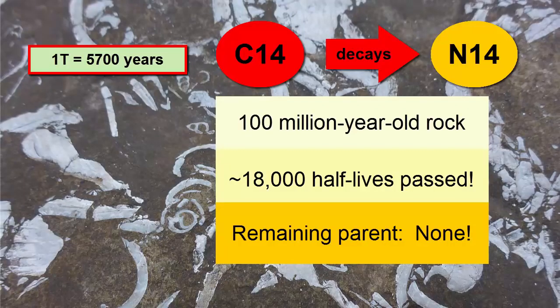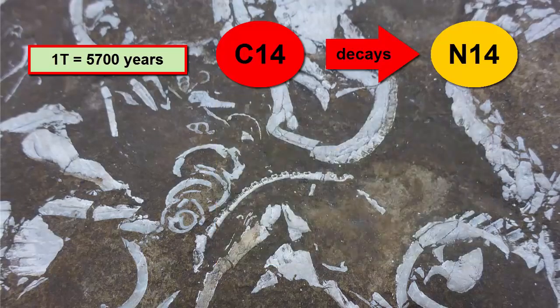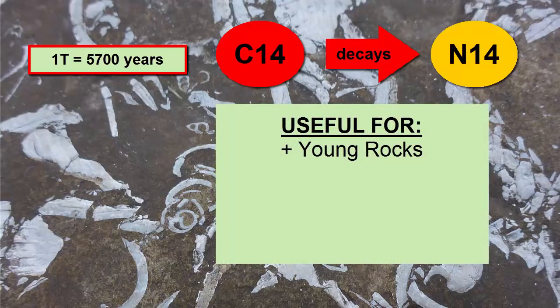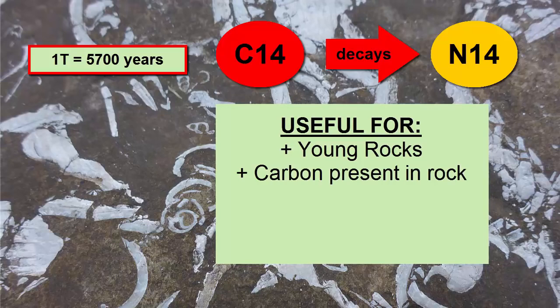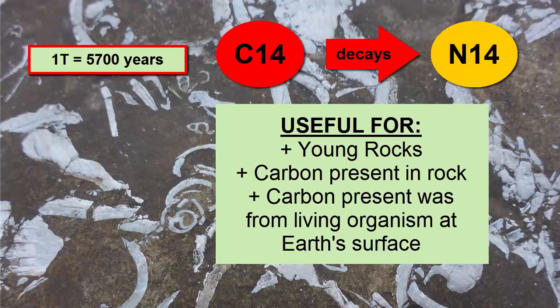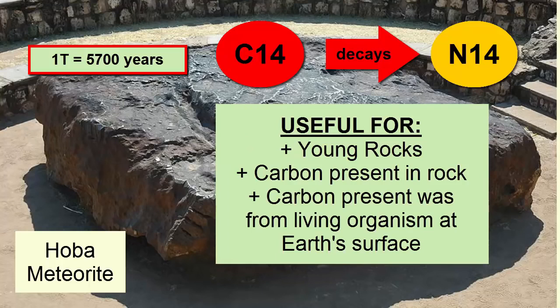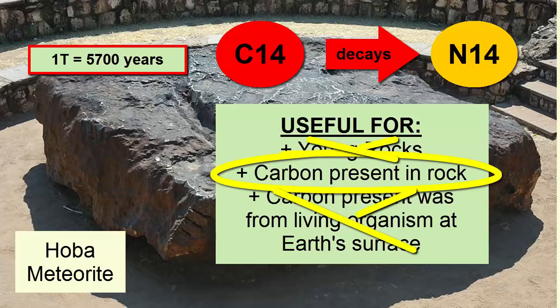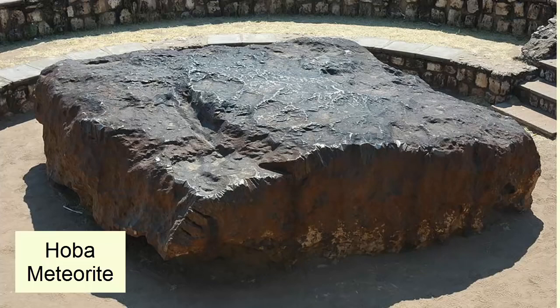In addition to the carbon-14/nitrogen-14 pair being useful only for relatively young rocks, this pair is also useful only if there is carbon in the rock — and specifically carbon that was present in a living organism at some point on Earth's surface. While one-half of all meteorites do contain some carbon, they fail on the other two requirements, and so we need to identify another radioactive decay pair to date meteorites.